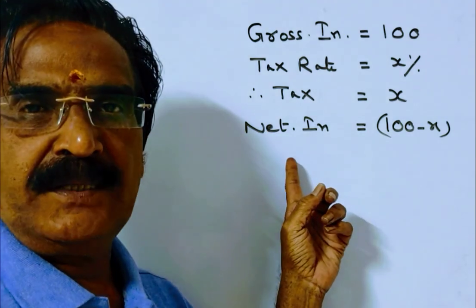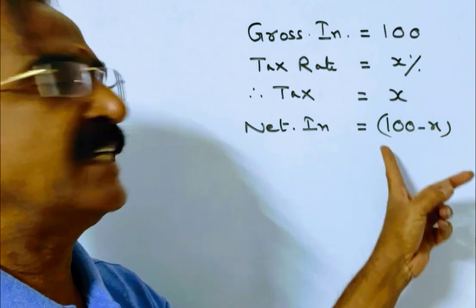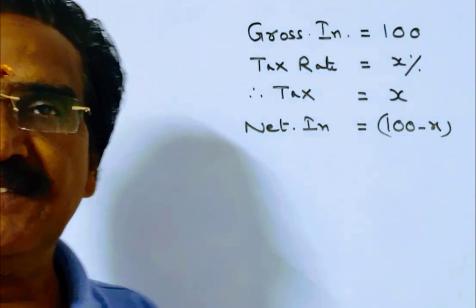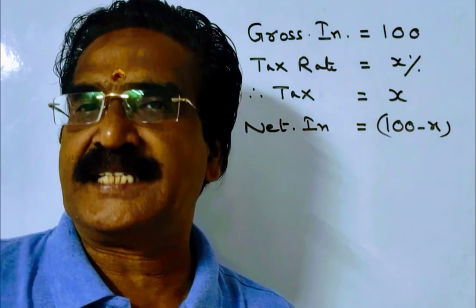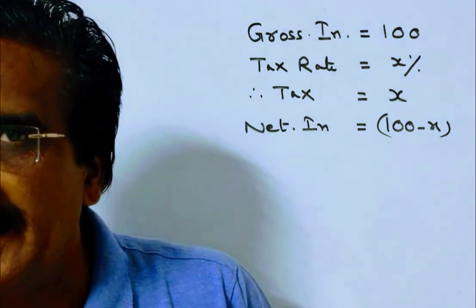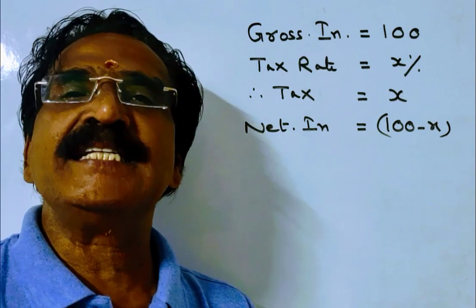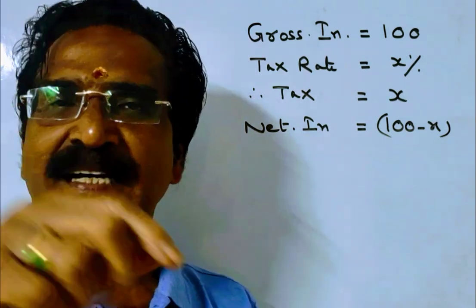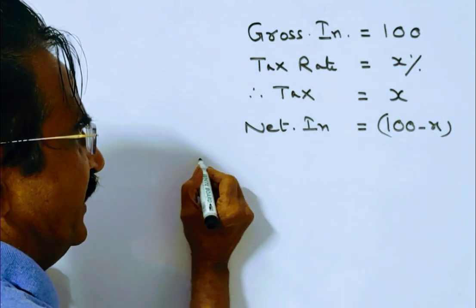Net income is equal to gross income minus tax, that is 100 minus x. Now it is given: if the income tax is increased by 17 percent, the net income is decreased by 3 percent. That means the increase in income tax is equal to the decrease in net income, so the increase in income tax is 17 percent.